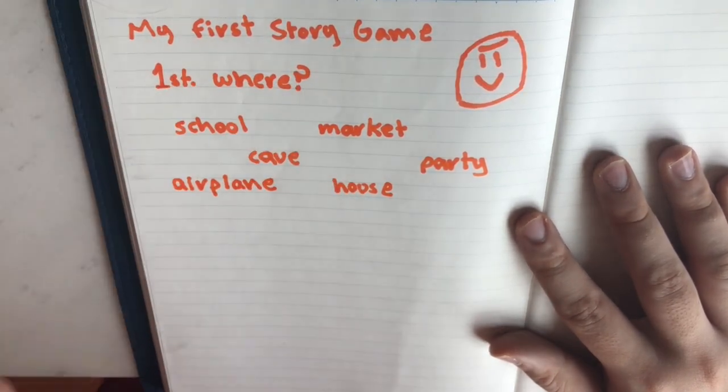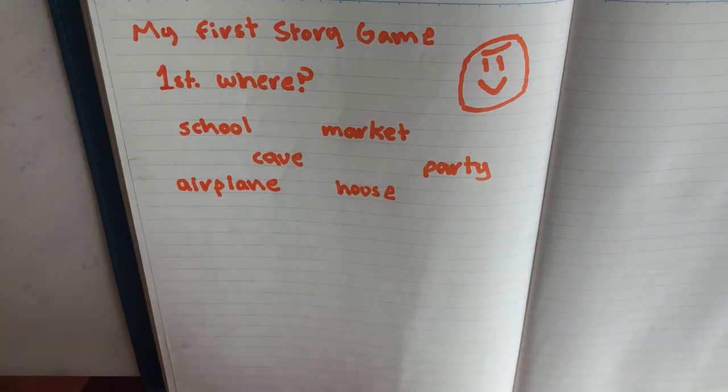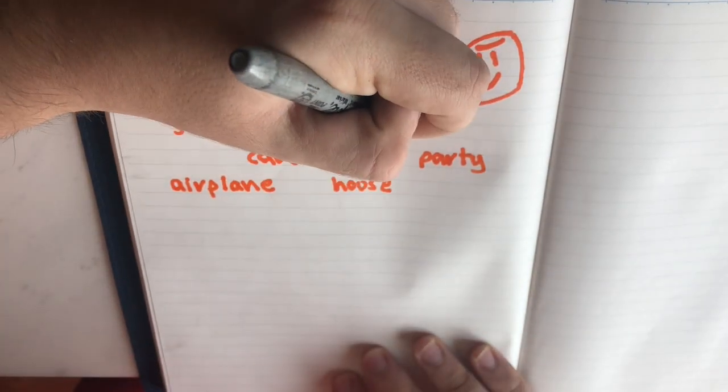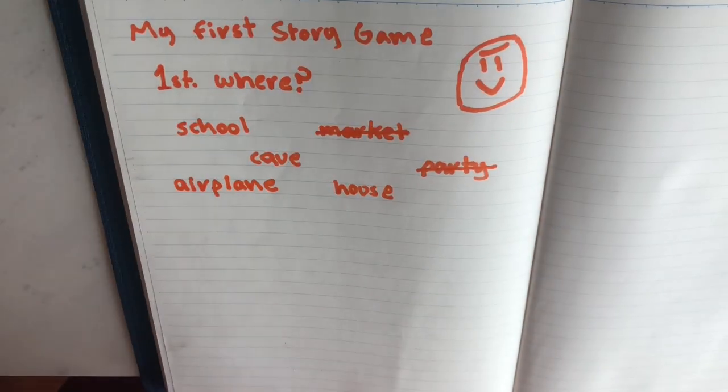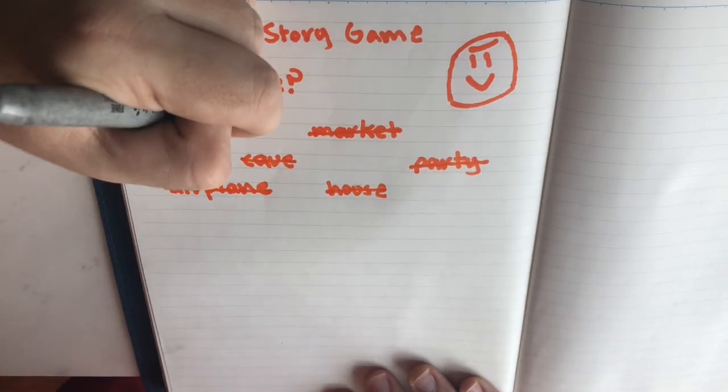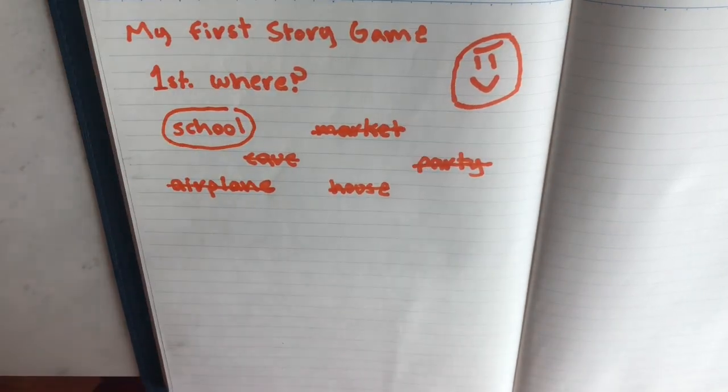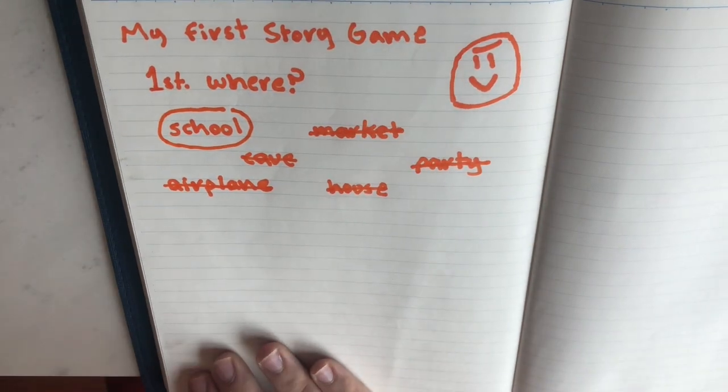Great, we have 6 ideas. Remember that your ideas don't have to be the same as mine. Now we are going to start crossing the ideas we like the less. We got a winner. Make sure it's something you really like. That will help you actually finish your game. Now we can go to point number 2.